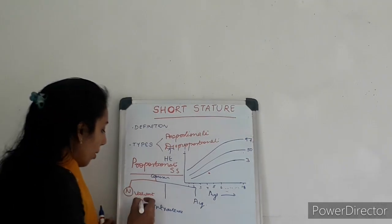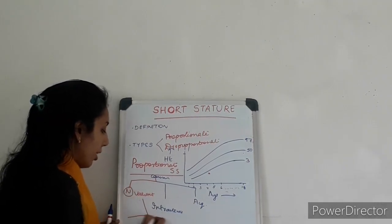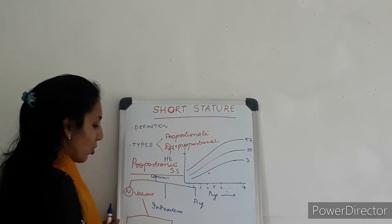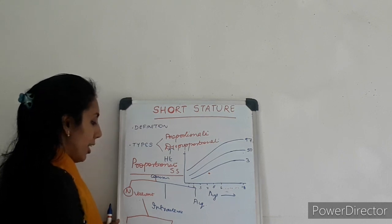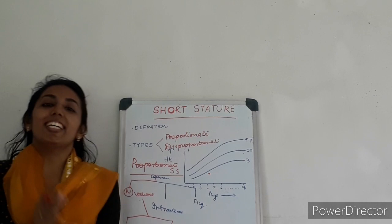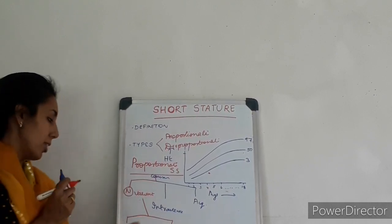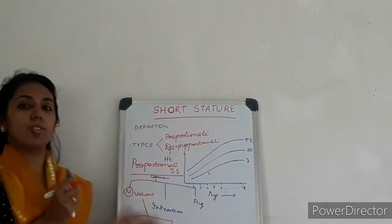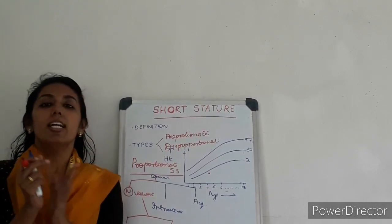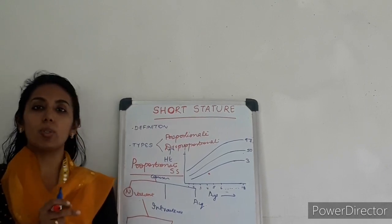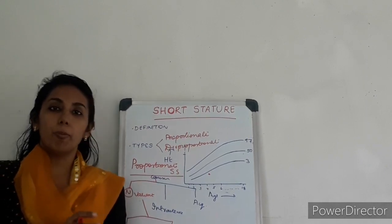The normal variants — that is why I am writing in red — we have mainly two types: familial short stature and constitutional delay of growth and puberty. This is a short question in most of the exams — that is familial short stature and CDGP, constitutional delay in growth and puberty.